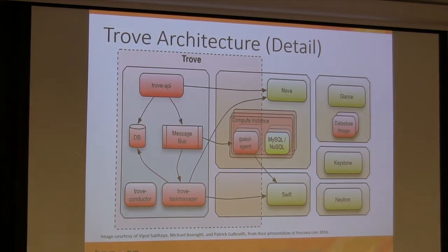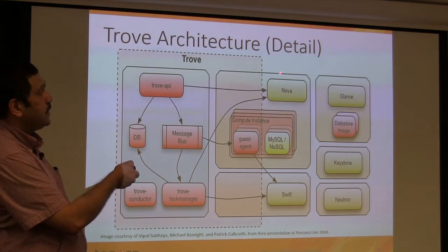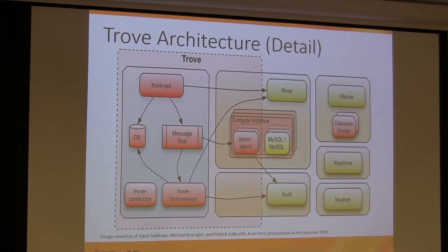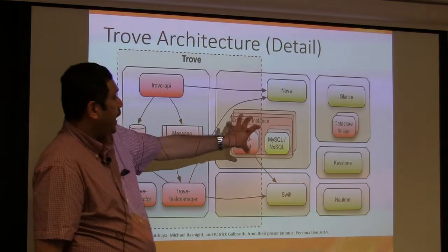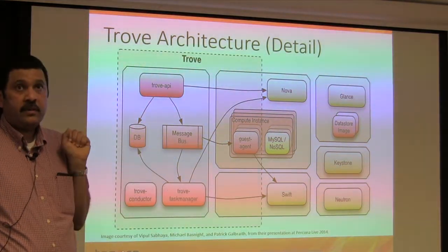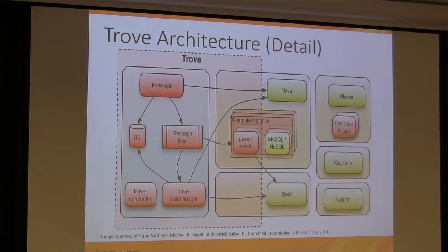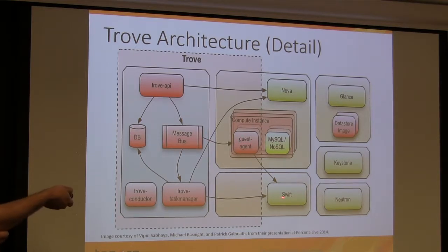When the Trove API says 'spin up a new instance,' it talks to Nova to provision a VM. The image it uses comes from Glance — effectively booting the image you want. A database boots up, a guest agent boots up. The Trove API can then talk to the guest agent and push down the configuration it wants. When all of that happens, all you get is access to your database — you don't get shell access. It's like RDS: MySQL port 3306, no port 22. You get a managed database instance.